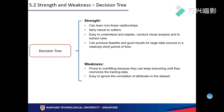As for decision tree, it has the following strengths: it can learn non-linear relationships, it can be fairly robust to outliers, it's easy to understand and explain, it can conduct visual analysis and extract rules, and it can produce good results for large data in short time. It also has some weaknesses: it's prone to overfitting because it can keep branching until it memorizes the training data, and it's easy to ignore the correlation of attributes in the dataset.